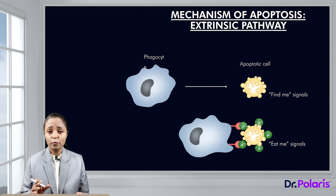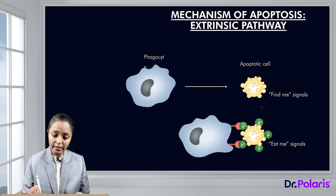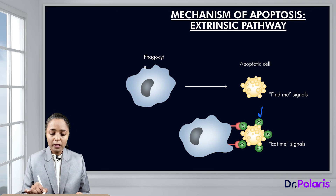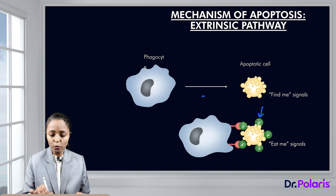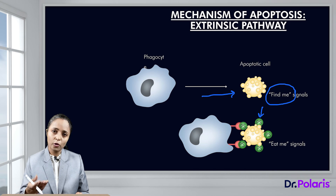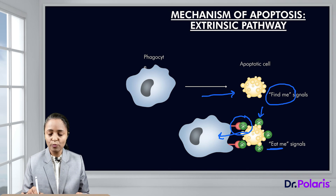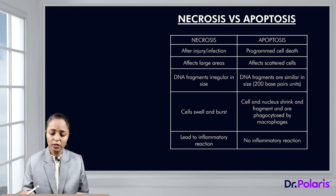There is a lipid — phosphatidylserine — normally present on the inner leaflet of the membrane, which switches to the outer leaflet during apoptosis. With the formation of apoptotic bodies, phagocytes are recruited by 'find me' signals, and because phosphatidylserine switches from the inside to the outside of the membrane, phagocytes can recognize the apoptotic bodies via these 'eat me' signals and carry out phagocytosis.